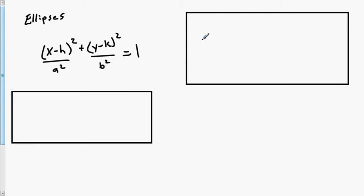The standard equation for an ellipse is x minus h squared over a squared plus y minus k squared over b squared equals 1. In this equation, h and k are important because the point (h, k) is our center. And a and b are going to be distances that we travel from the center to determine our ellipse.